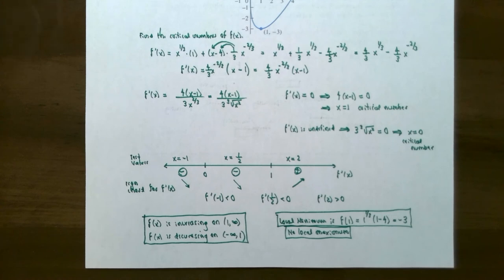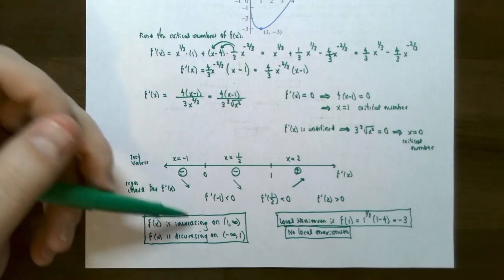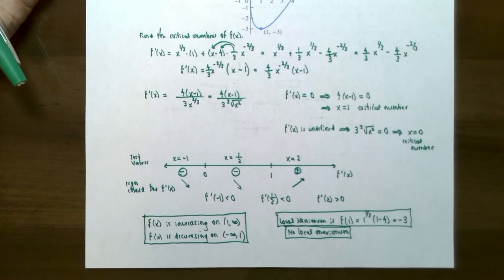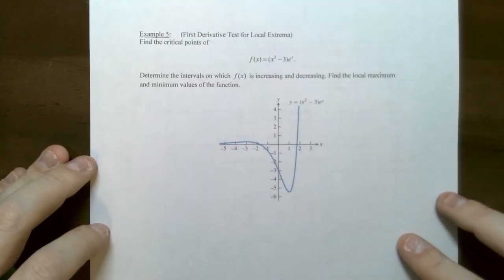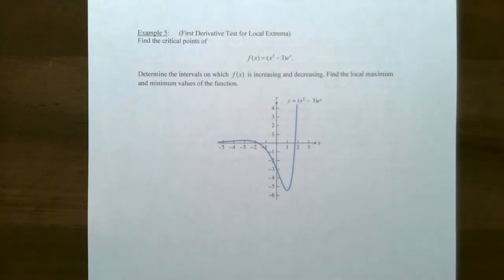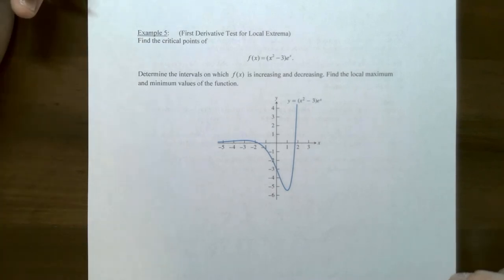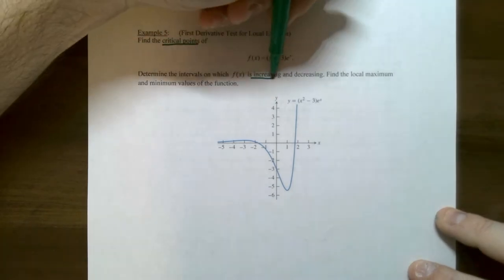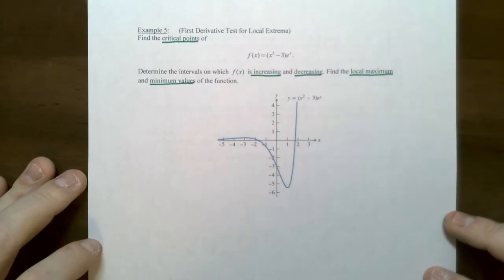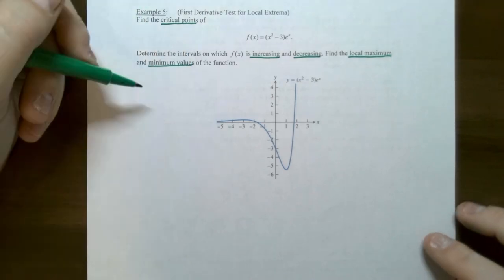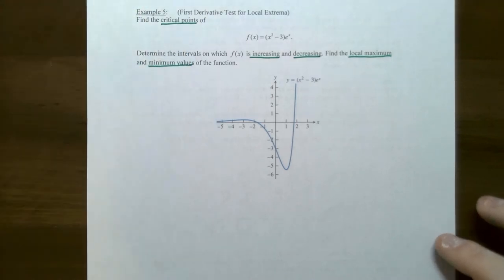So we've talked about critical points, increasing and decreasing intervals, and local max and local mins — local max and mins are just an extension of using the number line or sign charts. Let's try one more example in this section with the exact same instructions as example four. Find the critical points of the function x squared subtract three times e to the x, determine where the function is increasing and decreasing, and determine any local maximum or local minimum values. The graph is given, but it's not to be used — we need to use calculus to find the local max and local minimum values.